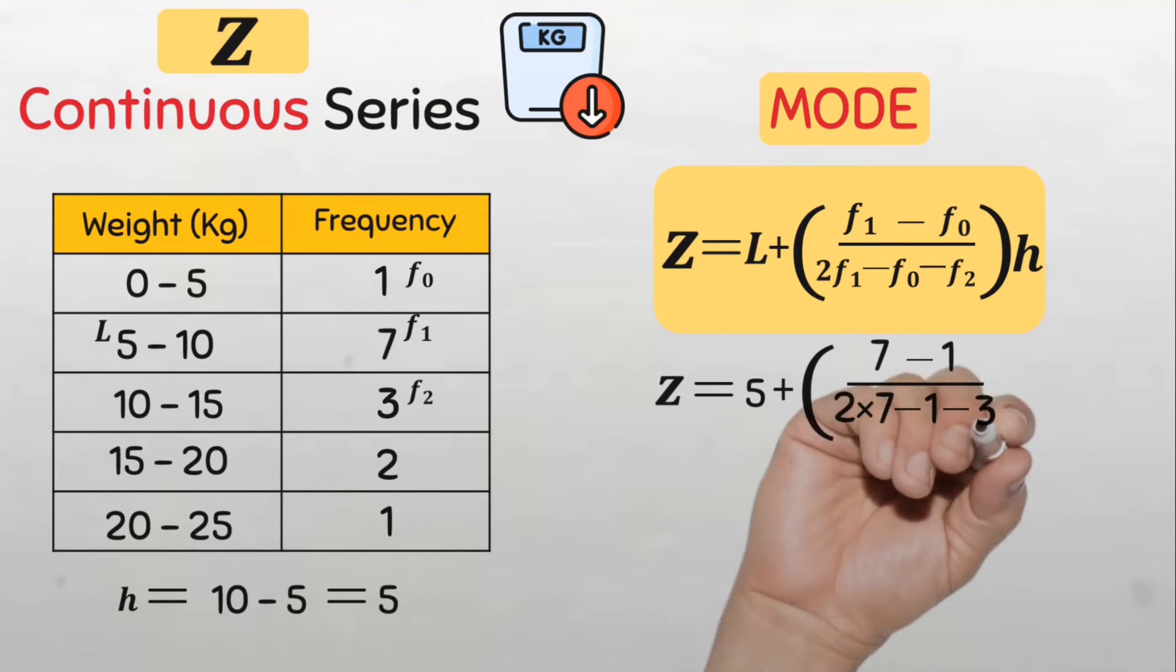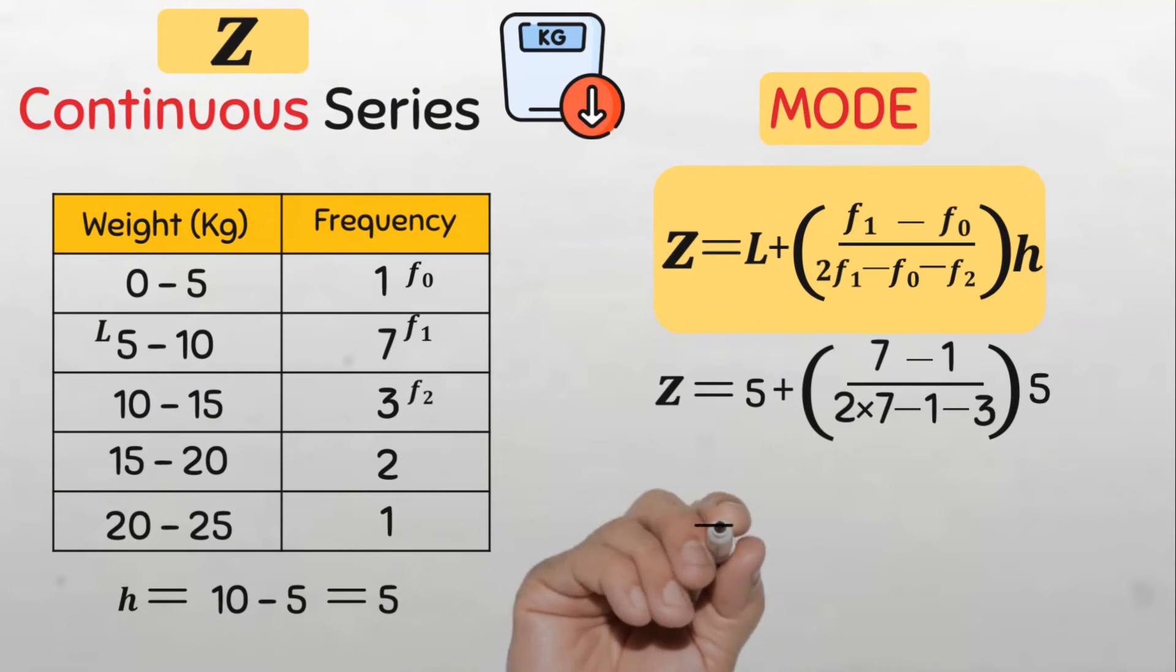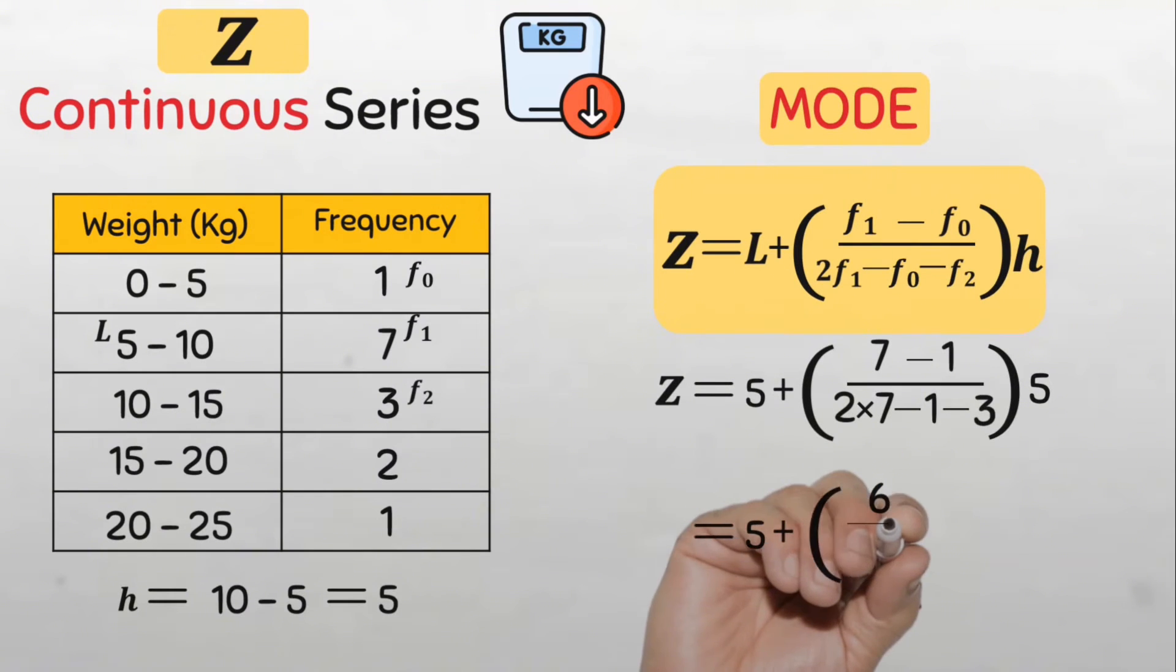Then close parenthesis and finally multiplied by h which is 5. So we'll have 5 plus 6 divided by 10 multiplied by 5. That will be 8. So our mode is 8 kilograms.